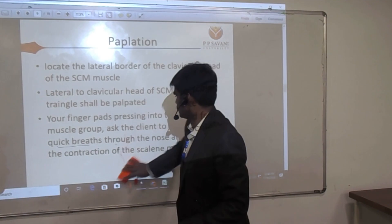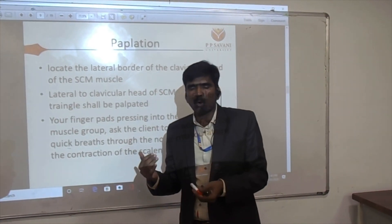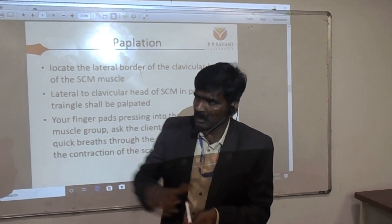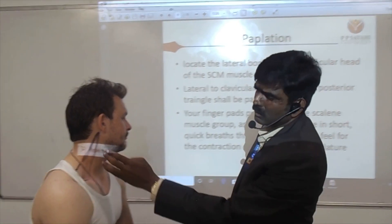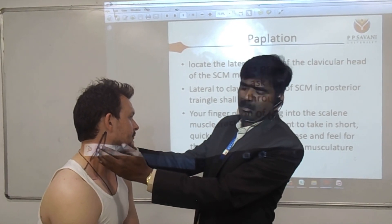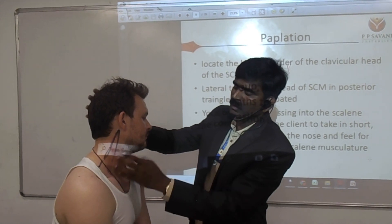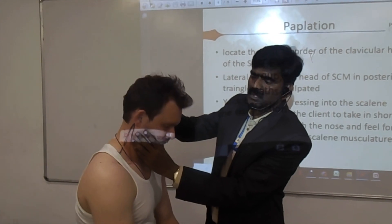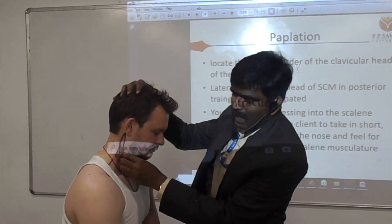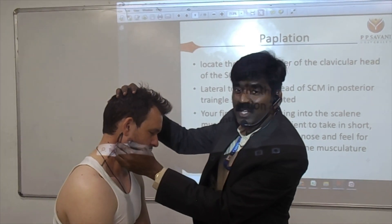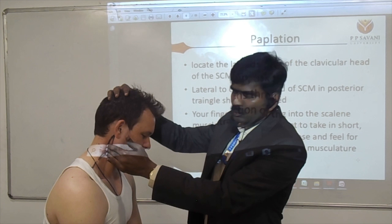To palpate the proximal attachment in the cervical region, you must relax the sternocleidomastoid muscle. Ask the patient to slightly flex the neck — when the patient slightly flexes, the sternocleidomastoid is relaxed. Now you can palpate easily by placing your hand behind the sternocleidomastoid. This is the palpation technique for the proximal part of the scalene muscle.